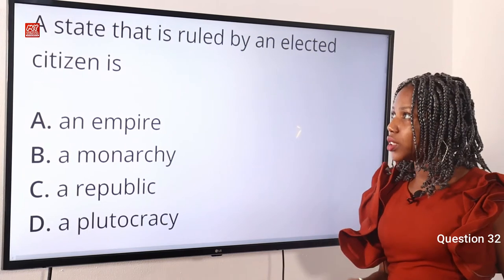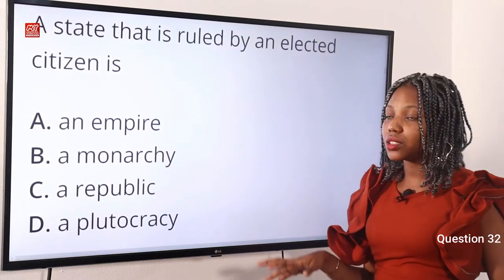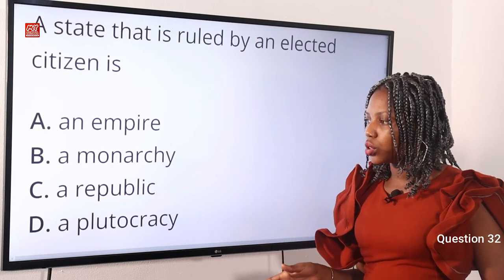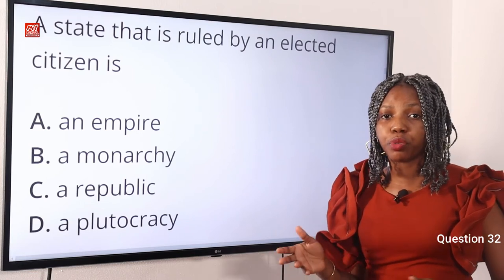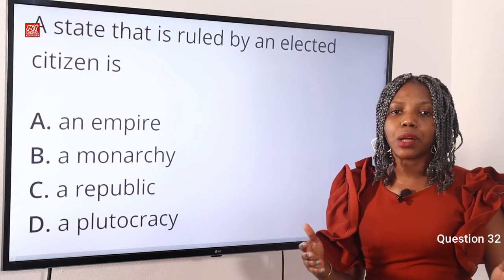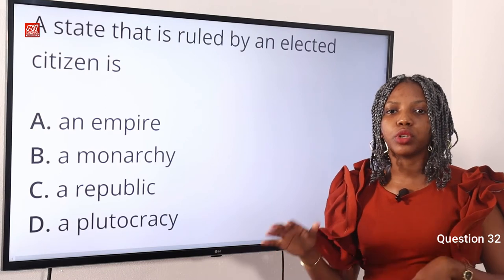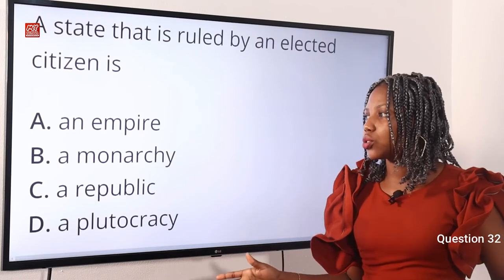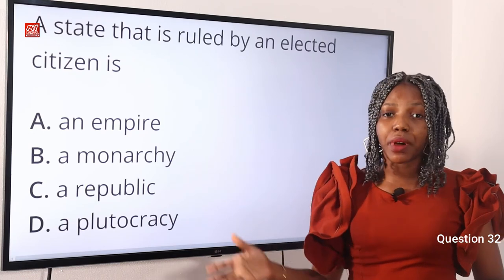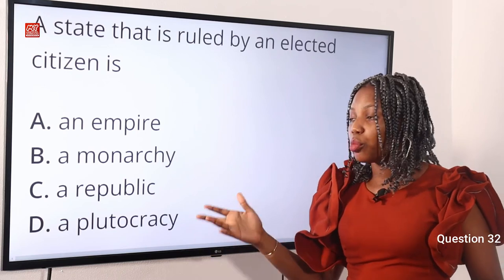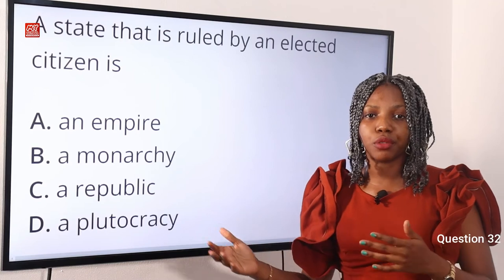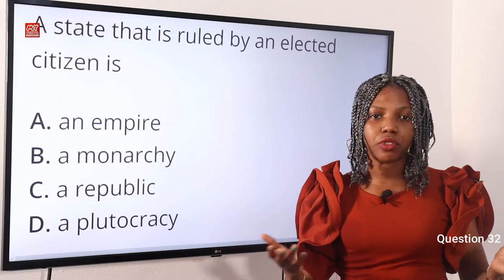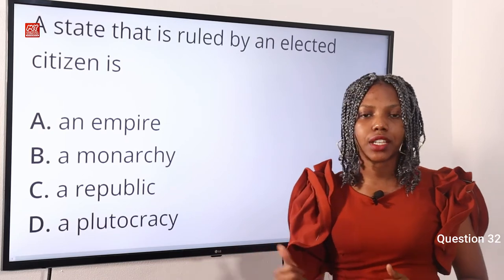Question 32. A state that is ruled by an elected citizen is: Option A, an empire. Option B, a monarchy. Option C, a republic. Option D, a plutocracy. The answer is a republic — Option C. A republic describes a state in which supreme power rests on the body of citizens entitled to vote and choose their representatives. An empire relates to a sovereign state, a monarchy is ruled by a king or queen, and plutocracy is a system in which the wealthy rule.